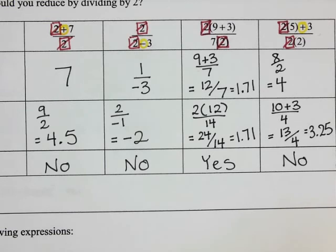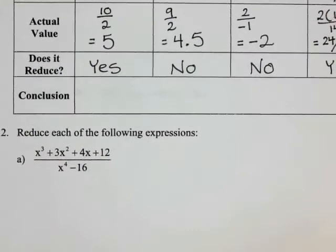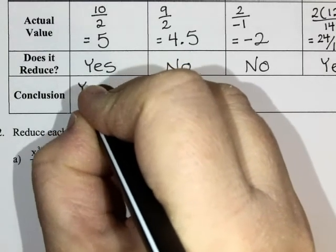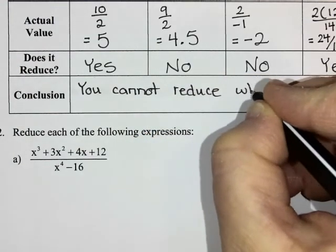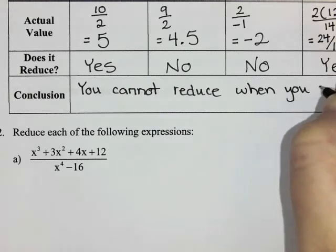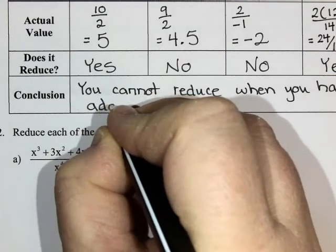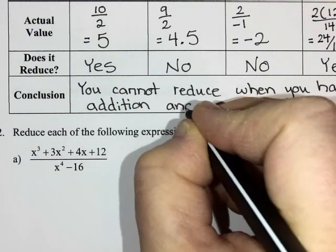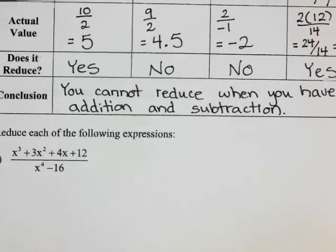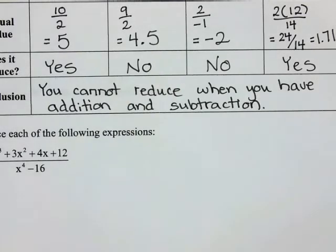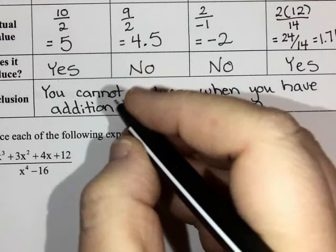When you're allowed to reduce is when things are factored — when things are multiplication questions. If you have addition or subtraction and it is not factored, then you cannot reduce. So my conclusion is: you cannot reduce when you have addition and subtraction. In order to reduce, it must be factored.